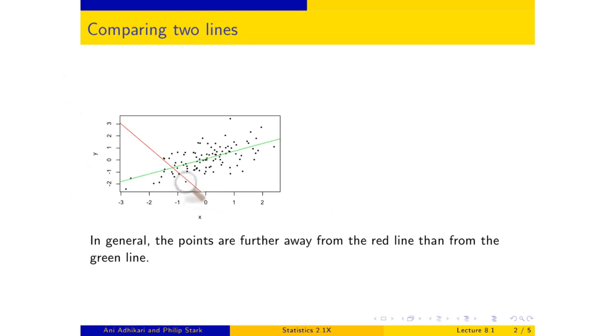It's true that some points, this one for example, is closer to the red line than to the green one, as is this one. But by and large, if you look at all of these, they're very close to the green line. Even those that are far from the green line are much further from the red line.